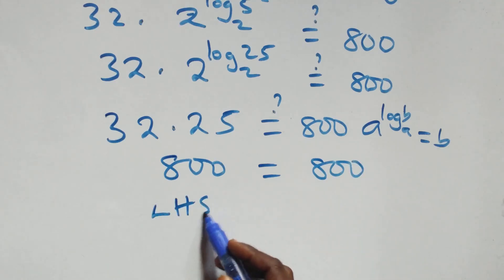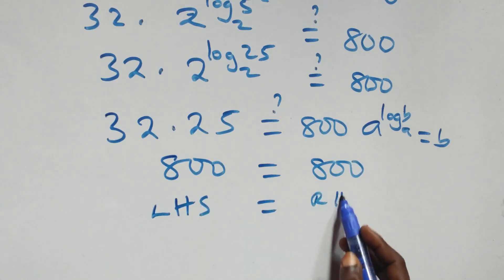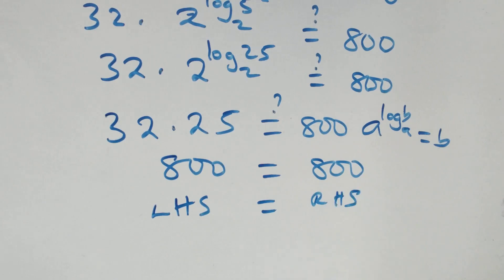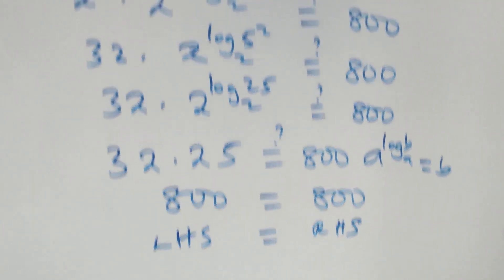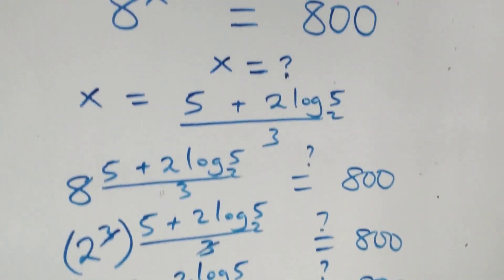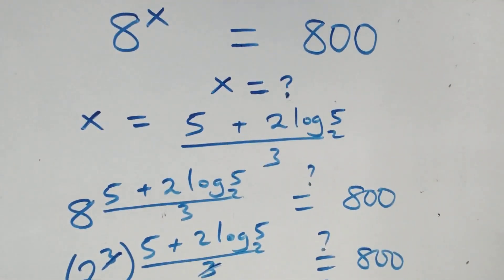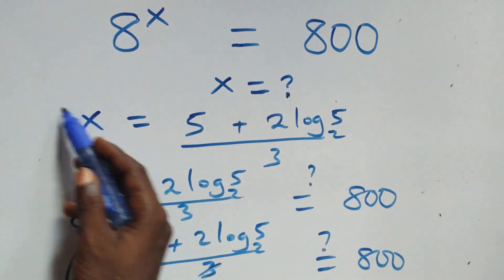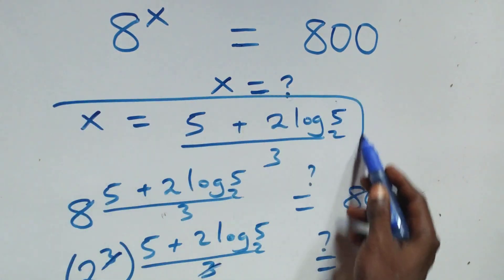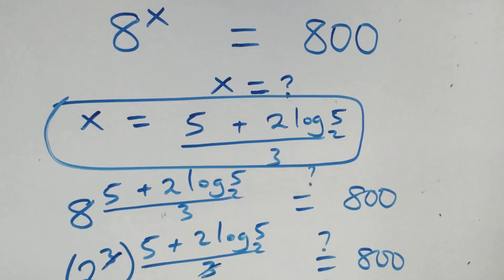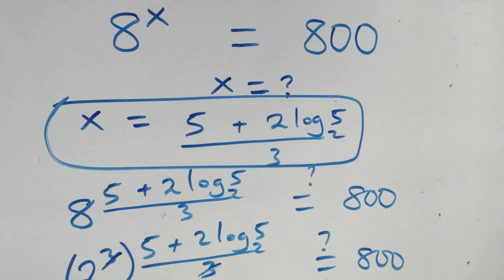Left hand side is equal to the right hand side, and therefore we conclude that x equals to (5 + 2 log₂5) / 3 satisfies this given problem. Thank you for watching — don't forget to subscribe for more videos, turn on notifications, share this video, and thumbs up with your comment. See you next time. Bye for now.